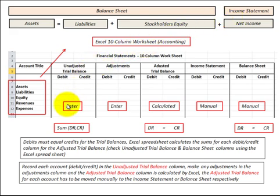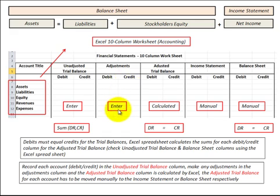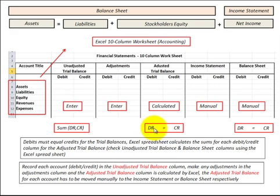We manually enter our unadjusted trial balance — the appropriate debits and credits for each account — and then you can sum those. If debits don't equal credits, you have to make adjustments, either debit or credit appropriately. The worksheet then calculates the adjusted trial balance based on your adjustments to the unadjusted trial balance, and sums the debits and credits. If they still don't equal, you go back and make further adjustments.